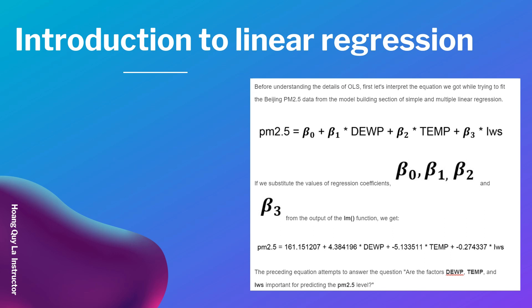We have PM 2.5 equals beta 0 plus beta 1 times DEWP plus beta 2 times TEMP plus beta 3 times Iws.